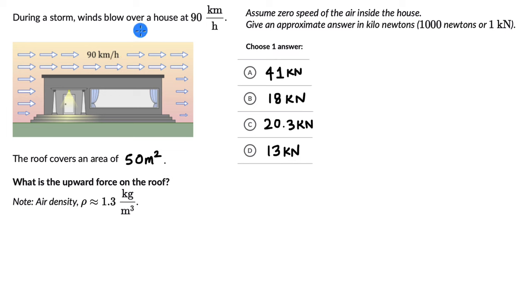During a storm, winds blow over a house at 90 km per hour. The roof covers an area of 50m². What is the upward force on the roof?